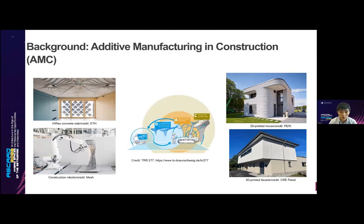Wall panels with textile reinforcement have also been prefabricated and then assembled on site. The TRR277 project, funded by the German Research Foundation, is dedicated to exploring AM technologies in construction from three perspectives: namely the material and processes, computational modeling and process control, and design and construction.